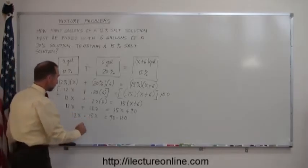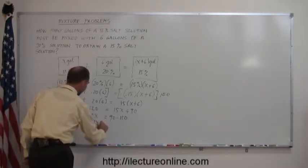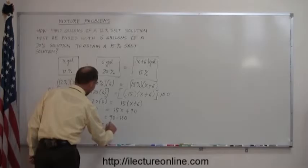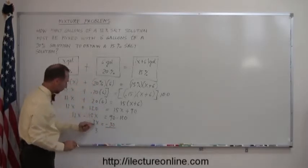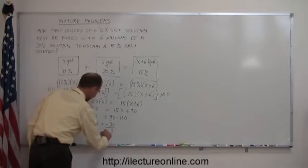12X minus 15X is negative 3X. 90 minus 120 is negative 30. Then divide both sides by the numerical coefficient of X. That cancels out, and we have X equals 10.